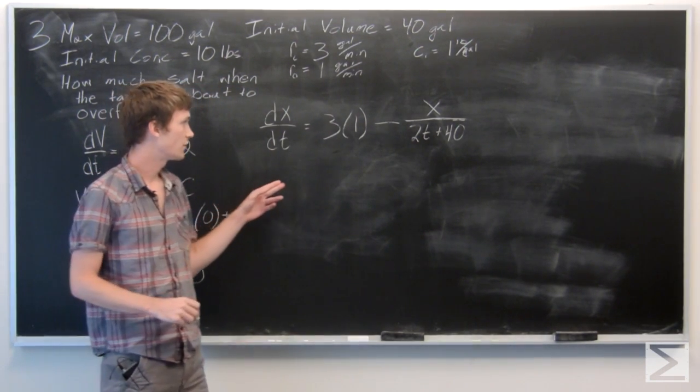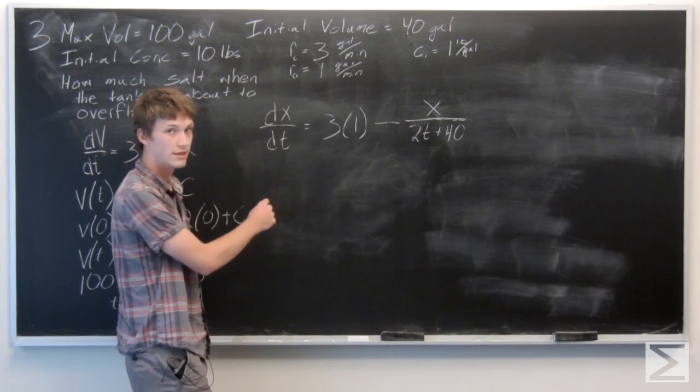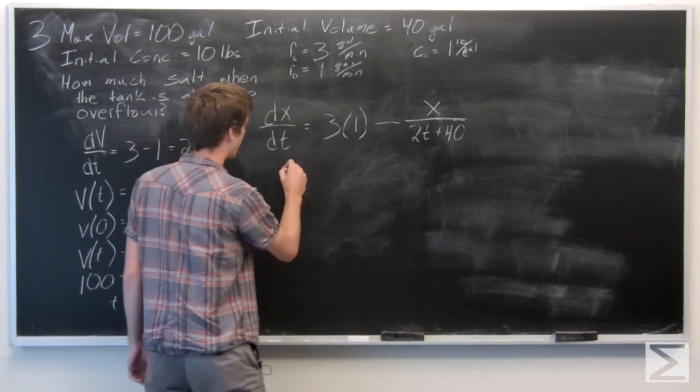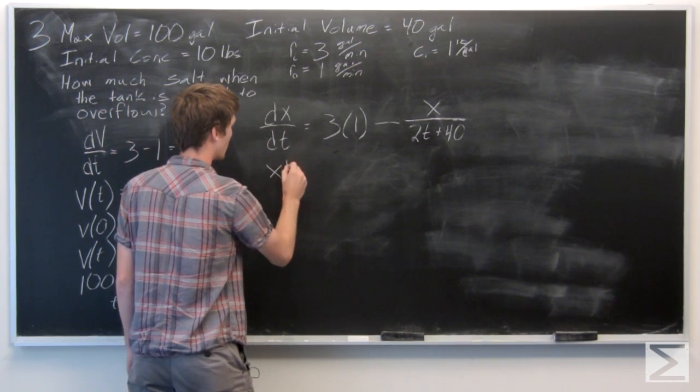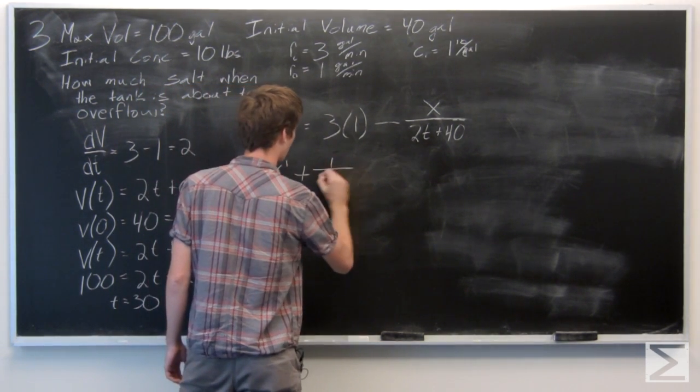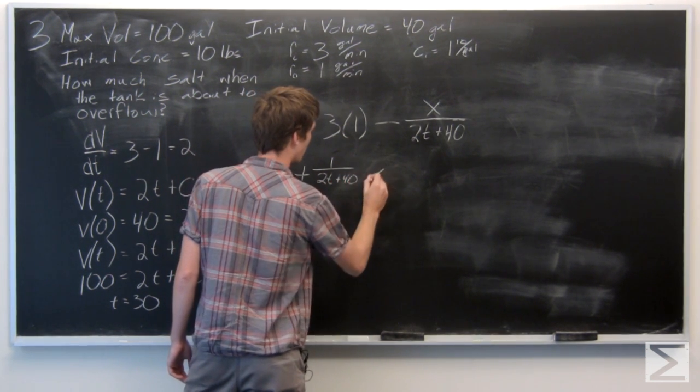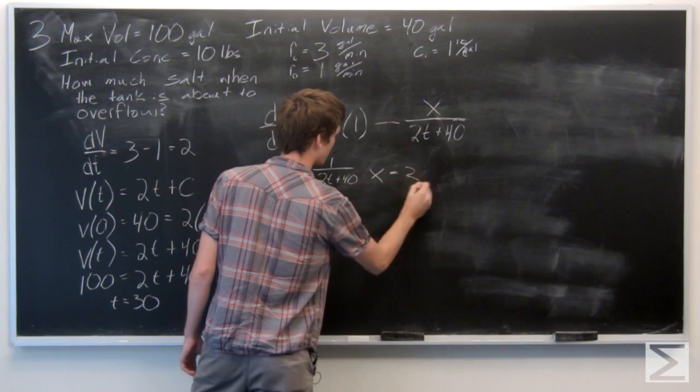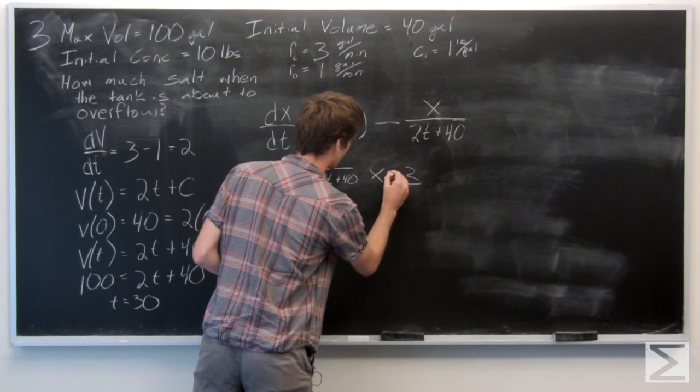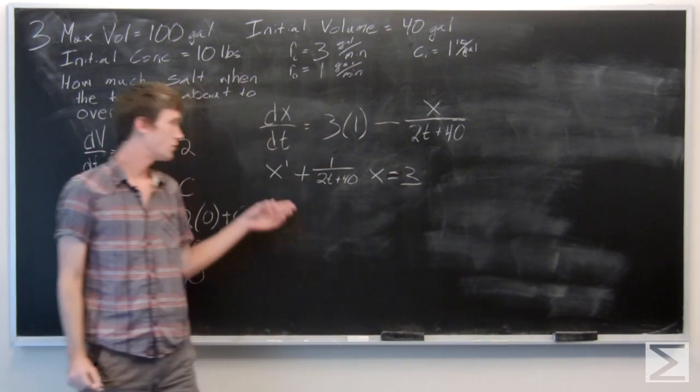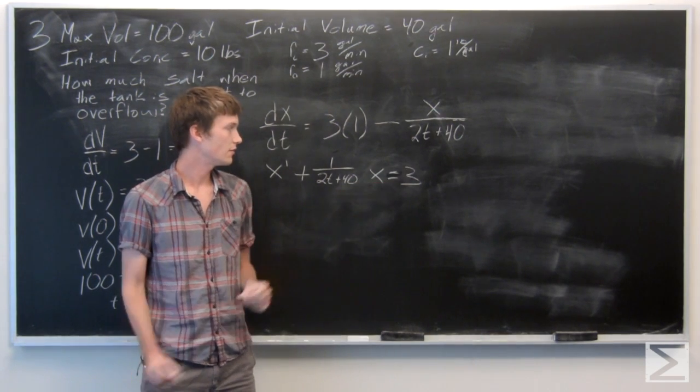Now, we can solve this linear differential equation in the normal way. I'll rewrite dx dt as x prime and bring the x over to the other side. So we get x prime plus 1 over 2t plus 40 times x equals 3.